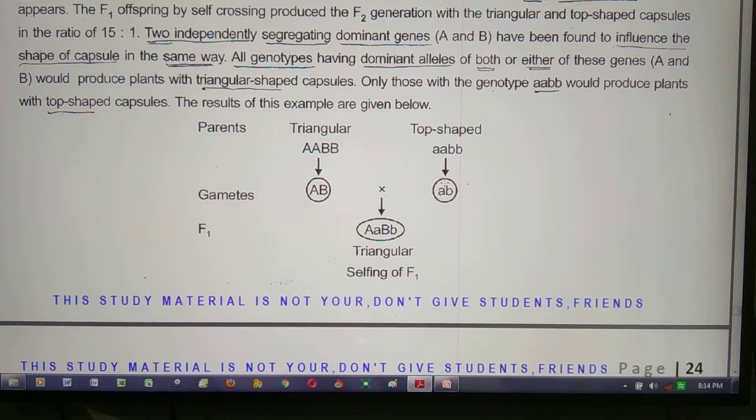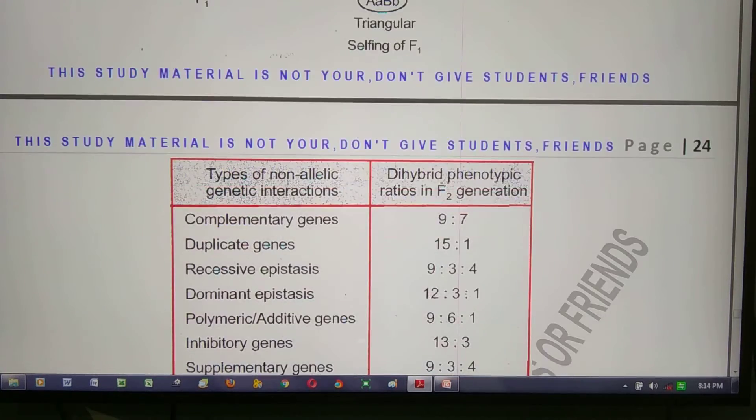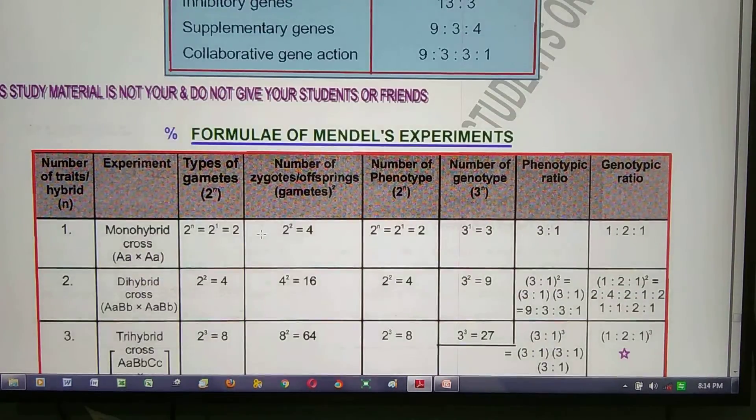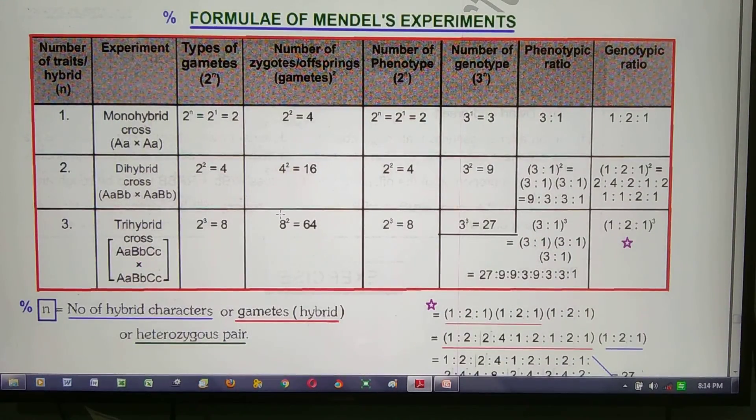The top-shaped is the double recessive. There are three types of epistasis: 9 to 7 giving total 15 to 1, recessive epistasis 9 to 3 to 4, and dominant epistasis 12 to 3 to 1.